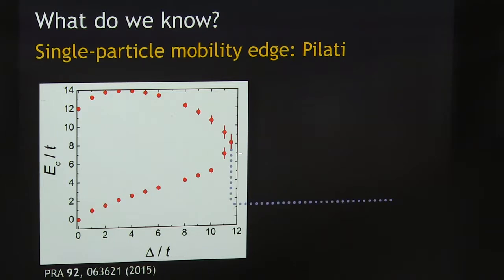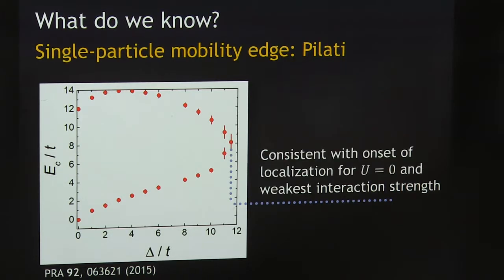This point here — 11 times the tunneling energy, which is required to close the whole band or localize all the single-particle states — is actually consistent with our measurements of localization for non-interacting gases (which we've never published) and for the weakest interaction strengths we consider transporting on.